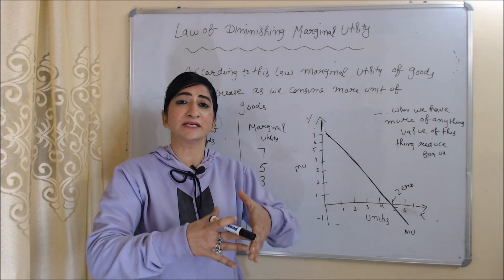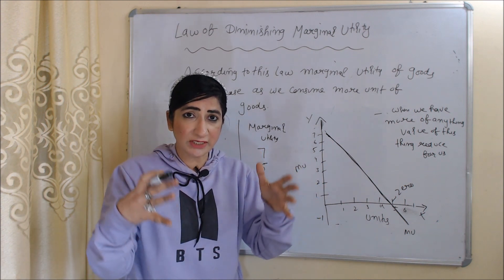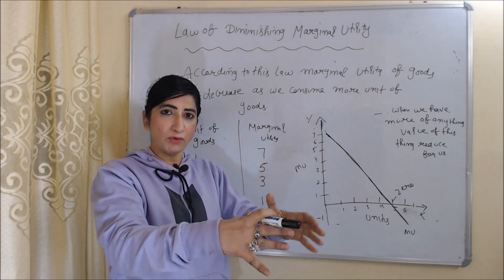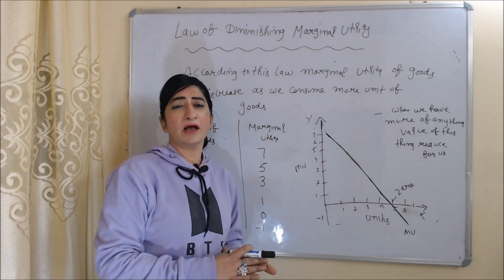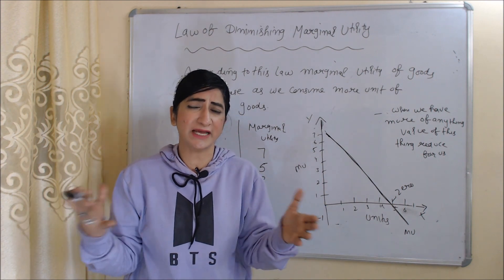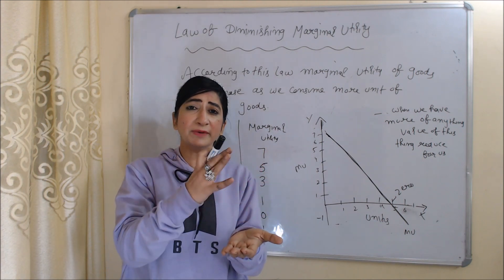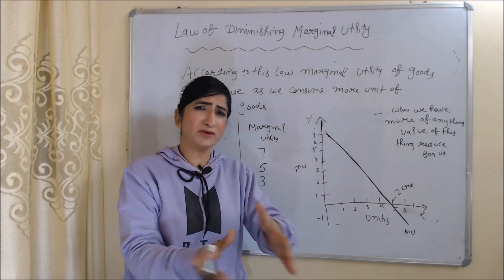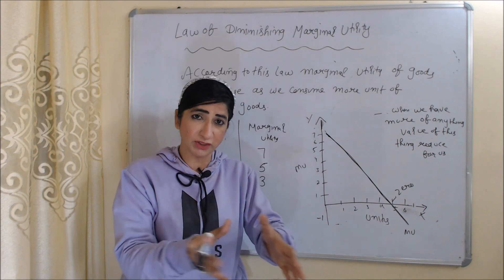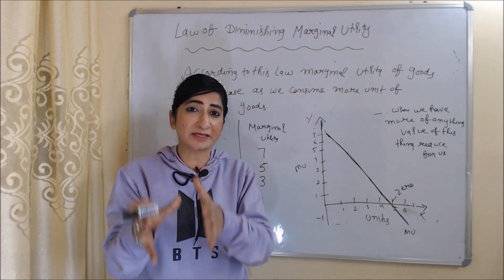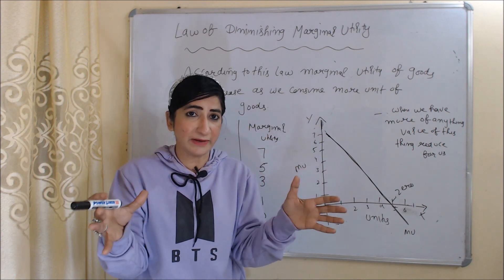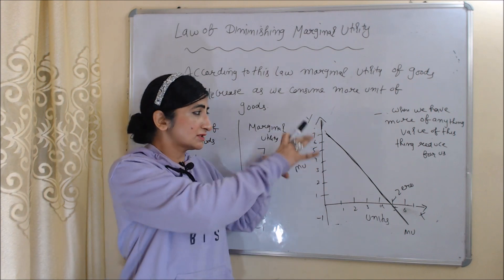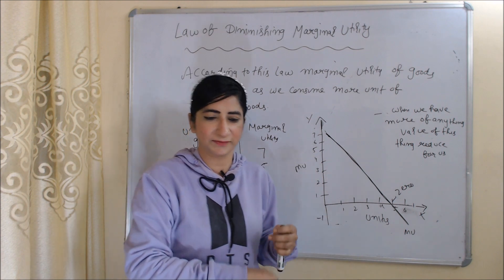If marginal utility is reducing as we consume more and more units, that means our happiness is reducing, our satisfaction is reducing, our value for the product is reducing. This is human nature — when we have more of something, its value reduces for us. For example, if you don't have any black shirt and you're crazy for it, one black shirt gives you so much happiness. But if you keep buying more black shirts, your value for them reduces. That's why as we consume more units, marginal utility falls.